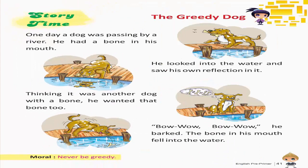Story time — The greedy dog. One day a dog was passing by a river. He had a bone in his mouth. He looked into the water and saw his own reflection in it. Thinking it was another dog with a bone, he wanted that bone too. He barked — wow, wow, wow! The bone in his mouth fell into the water. Moral: Never be greedy.